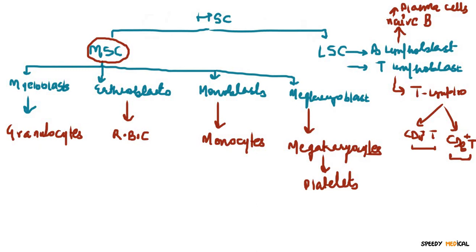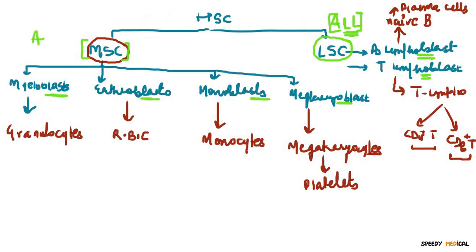As covered in the acute leukemias, neoplastic proliferation of the blasts gives rise to acute leukemias. For example, neoplastic proliferation of the lymphoid stem cells — the B lymphoblast and T lymphoblast — gives rise to acute lymphoblastic leukemia. Similarly, neoplastic proliferation of the myeloid blasts — the myeloblast, erythroblast, monoblast, and megakaryoblast — gives rise to acute myeloid leukemia. A link to those videos is in the description.